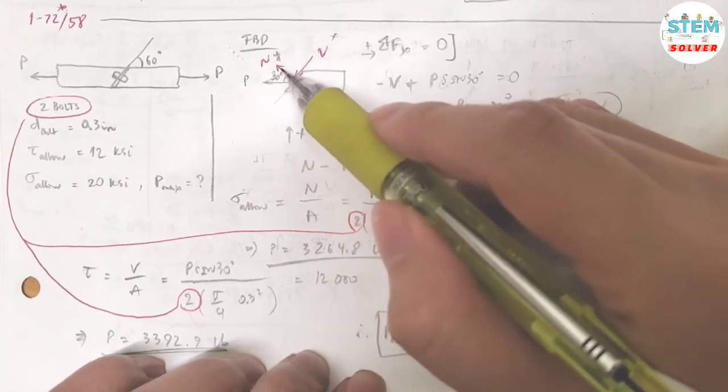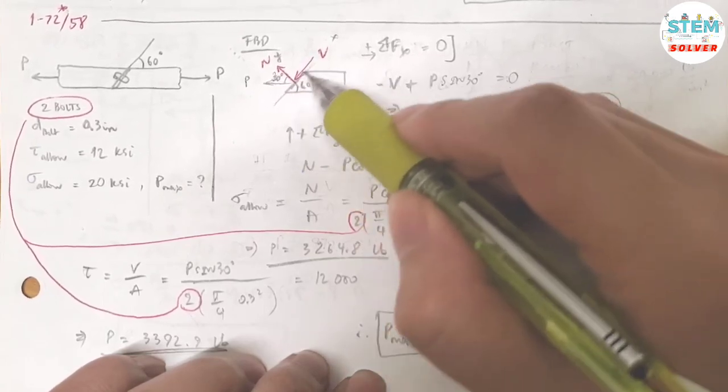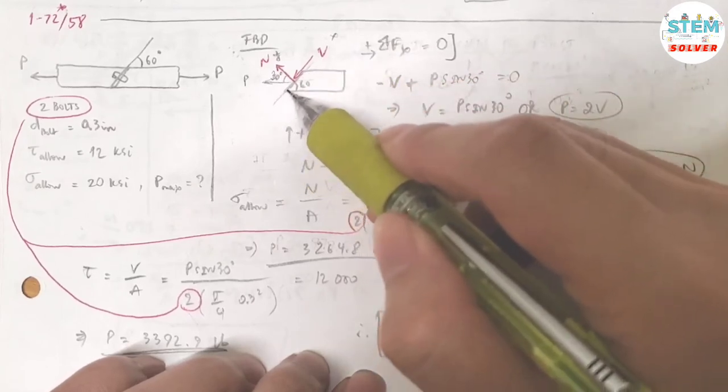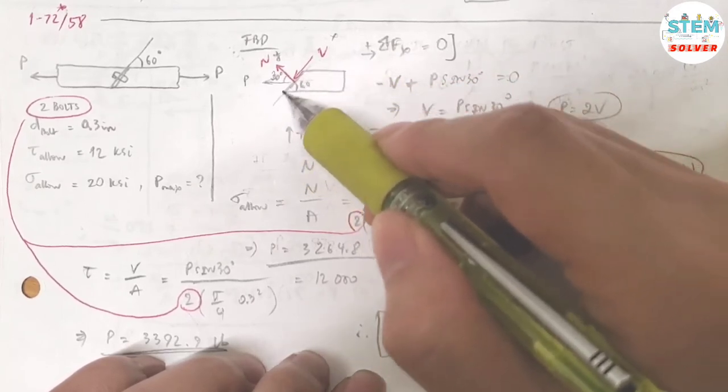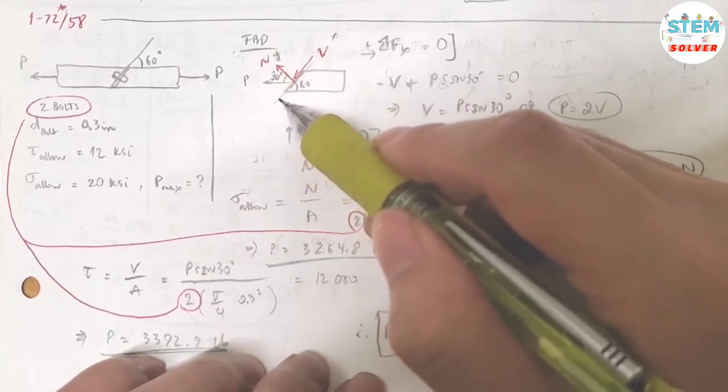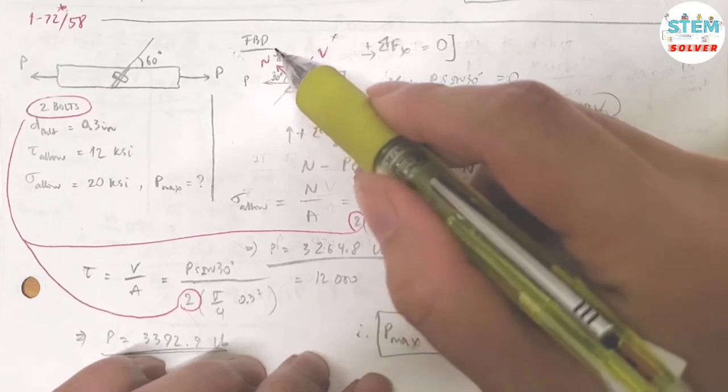The Y component force gives you the normal force because it's perpendicular to the plane. And here's your plane. The X component is your shear force because it's parallel to the plane. So you have shear force V in X direction, normal force N in Y direction.